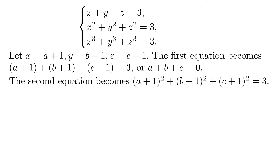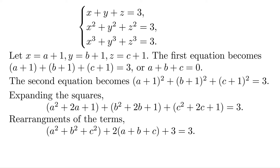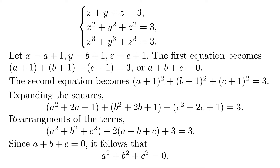Now the second equation: a plus 1 squared plus b plus 1 squared plus c plus 1 squared equals 3. Expanding the squares, we get a squared plus 2a plus 1 plus b squared plus 2b plus 1 plus c squared plus 2c plus 1 equals 3. Grouping terms, that is a squared plus b squared plus c squared, plus 2 times a plus b plus c, plus 3 equals 3. We already know a plus b plus c equals 0, so a squared plus b squared plus c squared equals 0.